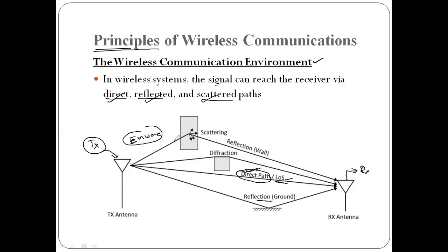The third type is the scattered path. When a wave hits a body or obstacle, it divides into sub-waves that scatter in different directions. These divided waves travel different paths and can eventually reach the receiver.